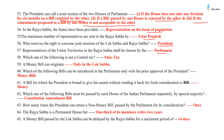Which of the following is not a central tax? It is sales tax. A money bill can originate only in the Lok Sabha. Which bills can be introduced in Parliament only with the prior approval of the President? It is money bills. A bill for which the President is bound to give his assent without sending it back for fresh consideration is a money bill. Which one of the following bills must be passed by each house of the Indian Parliament separately by special majority? Constitutional amendment bill. How many times can the President return a non-money bill passed by Parliament for reconsideration? Once. The Rajya Sabha is a permanent house but one-third of its members retire every two years. A money bill passed by the Lok Sabha can be delayed by the Rajya Sabha for a maximum period of 14 days.